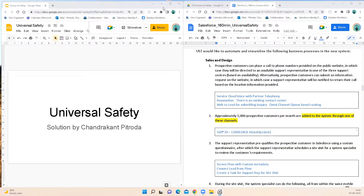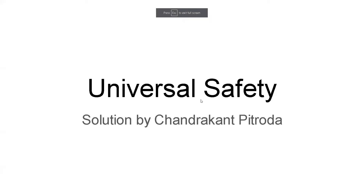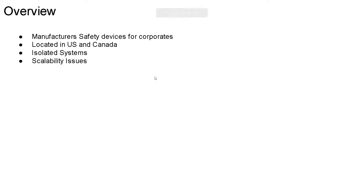Hi everyone, my name is Chandrakant. Today I'm presenting a Universal Safety solution. Starting with the company overview: Universal Safety is a safety device manufacturer serving corporate customers located in the US and Canada. Their business pain point is that they have different isolated systems with scalability issues, so they are looking for a centralized solution to help them grow their customer base and expand the business.